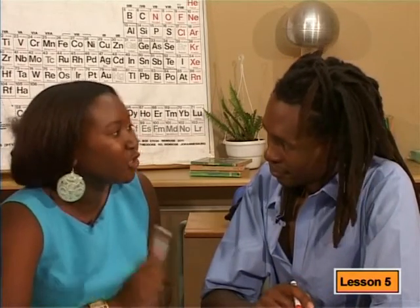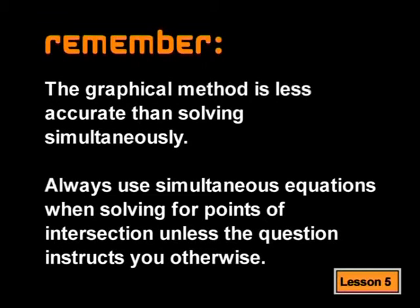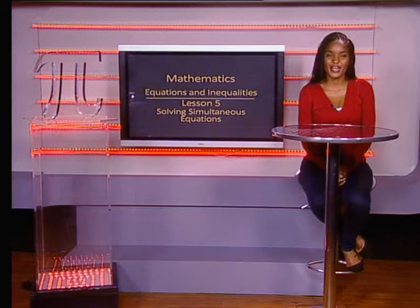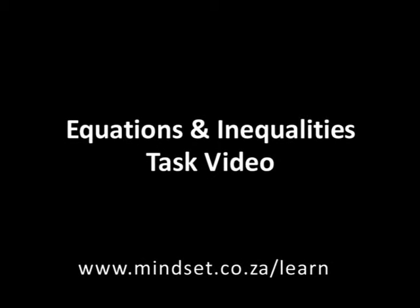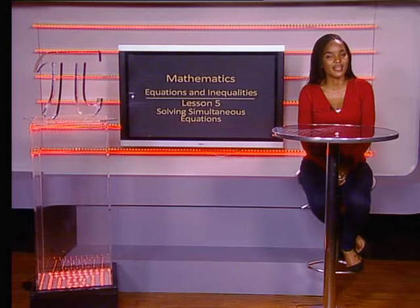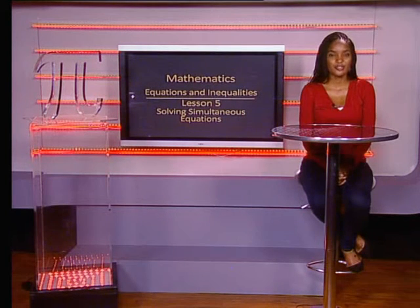Very well done. Now you know how to solve equations simultaneously, which is the same as finding the points of intersection of two graphs. Remember that the graphical method is less accurate than solving simultaneously. I suggest that you always use simultaneous equations when solving for points of intersection, unless the question instructs you to use the graphical method. Thank you for joining us, Grady Levens. Remember to look at the tasks for this section in the Equations and Inequalities task video. You'll also be able to learn more about equations and inequalities on our website, www.mindset.co.za/learn. Goodbye.